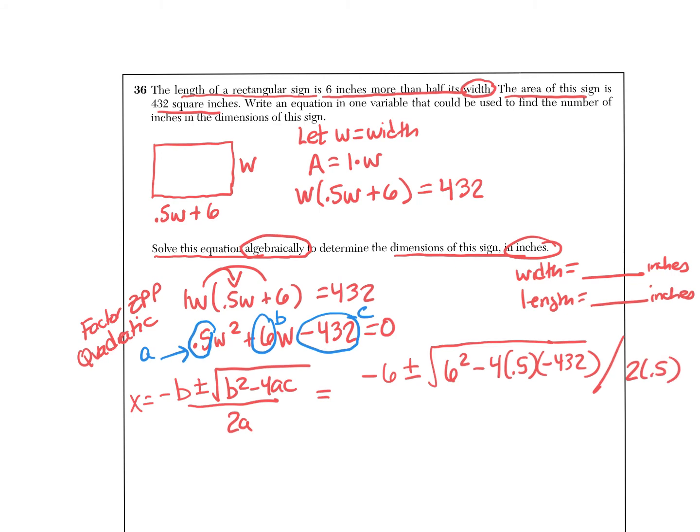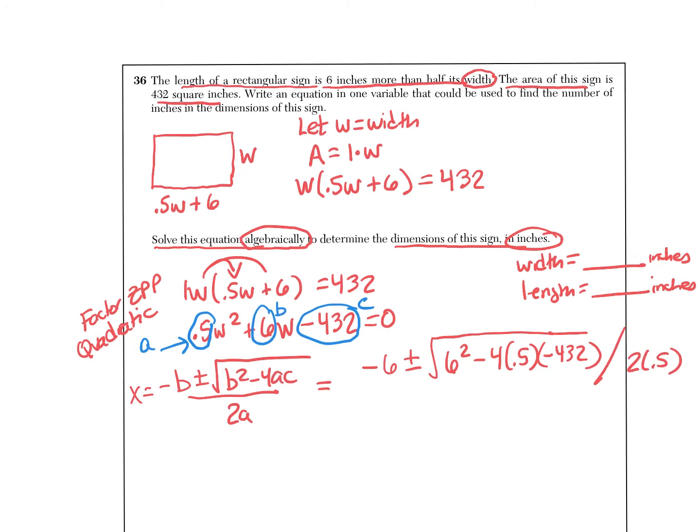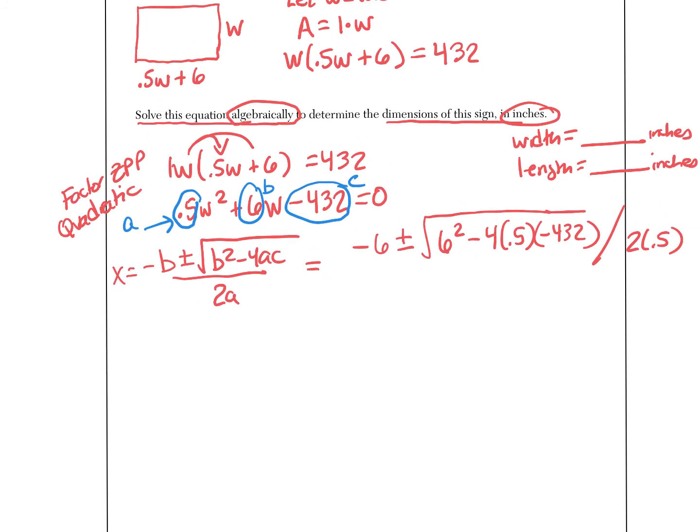For space I'm going to do this 2 times 0.5. Okay, so this is kind of nice. I'll just go down here and I'll say well, negative 6 plus or minus the square root of 36, and when you multiply this you've got to grab your 432 times 0.5 times 4. Negative times a negative is positive, so I come up with 864.